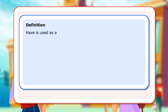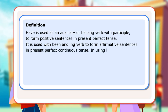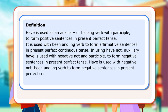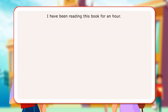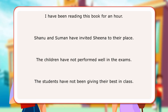Definition: 'Have' is used as an auxiliary or helping verb with a participle to form positive sentences in present perfect tense. It is used with 'been' and an -ing verb to form affirmative sentences in present perfect continuous tense. 'Have not' uses auxiliary 'have' with negative 'not' and a participle to form negative sentences in present perfect tense, and with 'not been' and an -ing verb for negative sentences in present perfect continuous tense. 'Have' and 'have not' can be used with I, we, they, you, or any plural subject. Examples: I have been reading this book for an hour. Shanu and Suman have invited Sheena to their place. The children have not performed well in the exams. The students have not been giving their best.